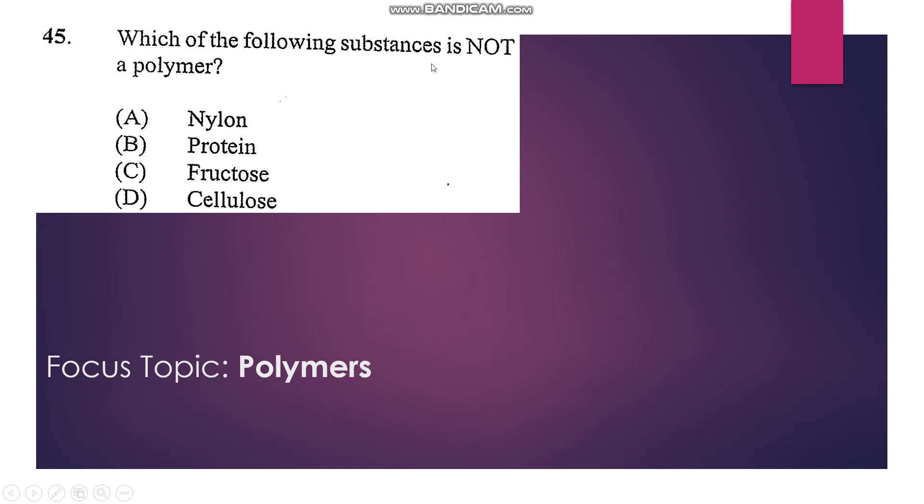45: Which of the following substances is not a polymer? Nylon is a polymer, protein is a polymer, fructose is a monosaccharide so that's out, cellulose is a polymer. So our answer would be C.